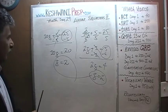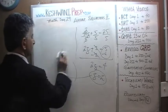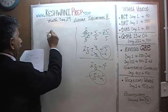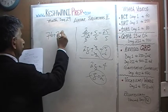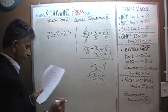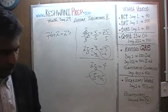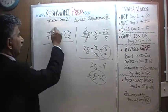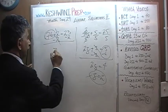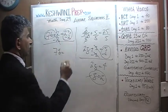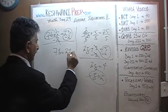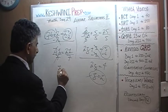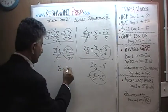Let's do one more. 7b plus 2 equals 23. Let's subtract 2 from both sides. The 2 is going to drop out and 7b equals 23 minus 2 which is 21. Divide both sides by 7. 7 is going to drop out and b equals 21 divided by 7 which is 3.